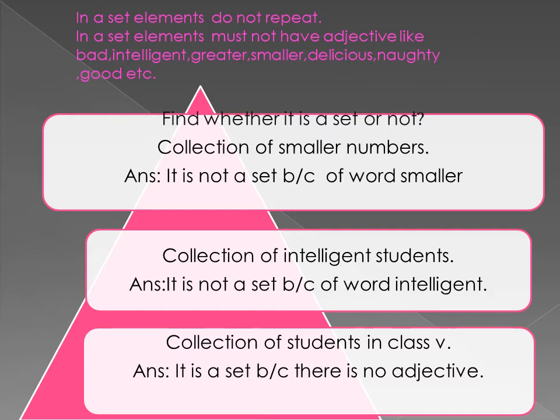It is not a set because of the word 'smaller.' If you take the set {1, 2, 3, 4, 5, 6}, then 1 is smaller than 2, and 2 is smaller than 3 — a collection of smaller numbers is not possible, so it is not a set. In the second question, 'collection of intelligent students' — there is an adjective 'intelligent,' so it is not a set. However, 'collection of students in class 5' is a set because there is no adjective — it is a well-defined collection.